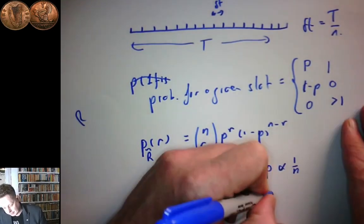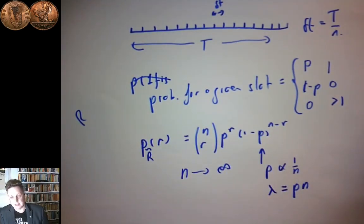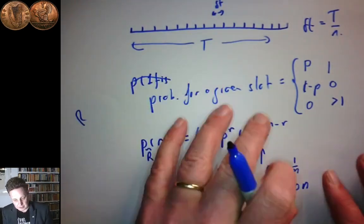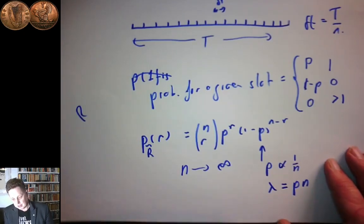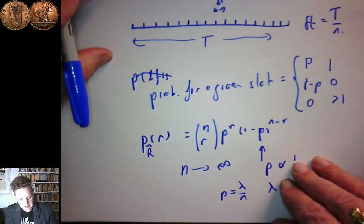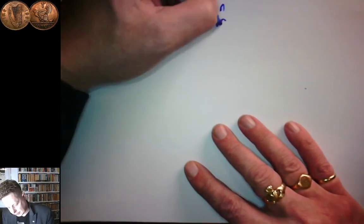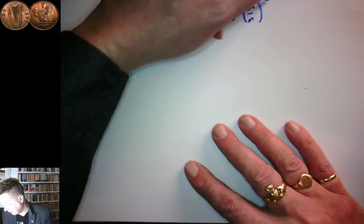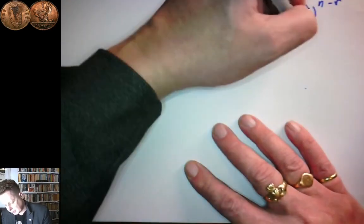So instead of dealing with p, we're going to deal with a quantity lambda = p × n. The hope is that if we deal with this lambda, we'll end up with something that remains finite and well-defined as n → ∞. So instead of writing p, we write p = lambda/n, assuming lambda doesn't depend on n. So P(r̃ = r) = n choose r times (lambda/n)^r times (1 − lambda/n)^(n−r), where lambda = p × n.